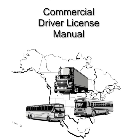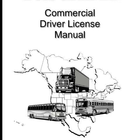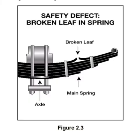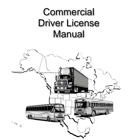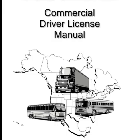Suspension system defects: the suspension system holds up the vehicle and its load and keeps the axles in place. Broken suspension parts can be extremely dangerous. Look for spring hangers that allow movement of axle from proper position (see figure 2.2); cracked or broken spring hangers; missing or broken leaves in any leaf spring — if one-fourth or more are missing, it will put the vehicle out of service, but any defect could be dangerous (see figure 2.3). Also look for broken leaves in a multi-leaf spring or leaves that have shifted so they might hit a tire or other part; leaking shock absorbers; torque rod or arm, U-bolts, spring hangers, or other axle positioning parts that are cracked, damaged, or missing; air suspension systems that are damaged and/or leaking (see figure 2.4); any loose, cracked, broken, or missing frame members.